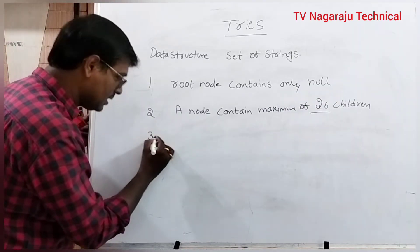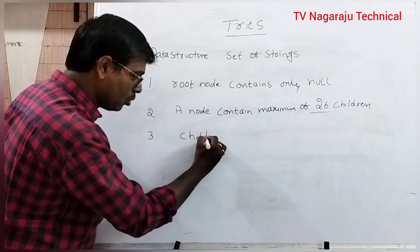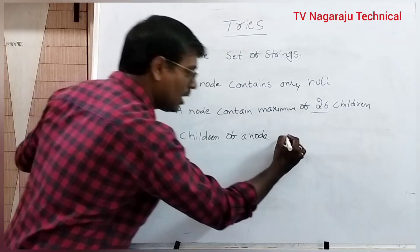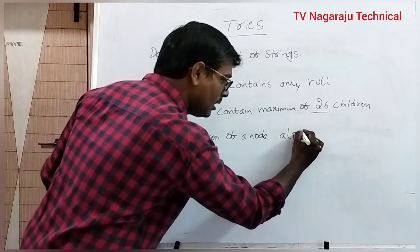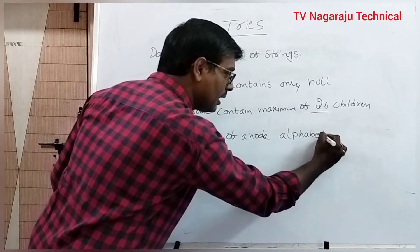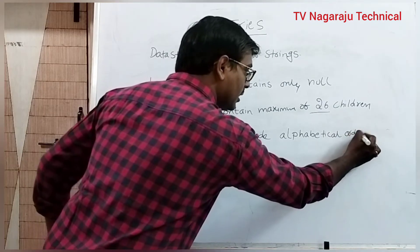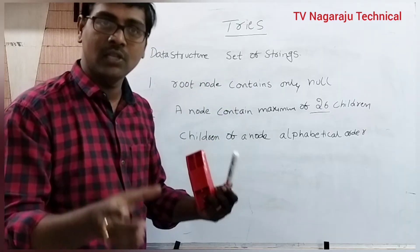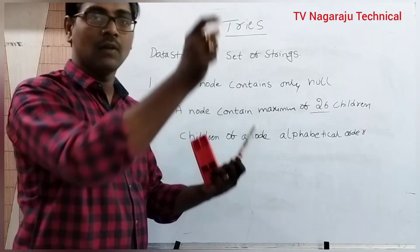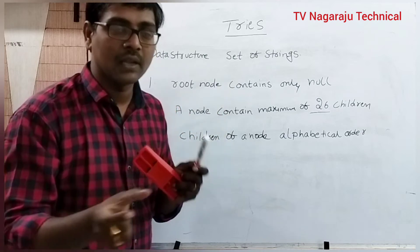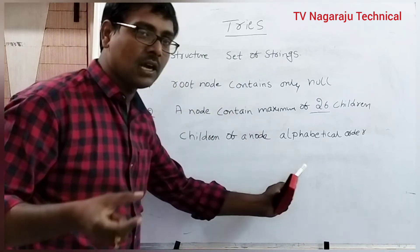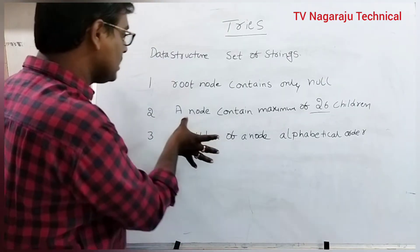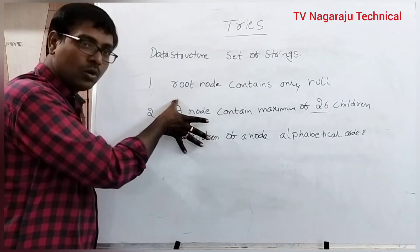The children of a node are arranged in alphabetical order. That is, consider one node — that node contains many children. All the children of a particular node are arranged in alphabetical order, that is, in sorted order. These are the main rules that you have to follow.